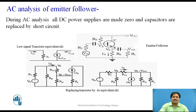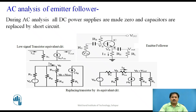We are more interested in the AC analysis of the emitter-follower circuit. In this case, we are replacing all the DC supplies by zero and all the capacitors by short circuits. Moreover, we are going to replace the transistor by a small-signal transistor circuit, which consists of an impedance called HI and a current source that depends upon the input current flowing in the base. In the circuit, the input current is IN, HI is the input resistance, and the current source is given as HFE into IN, and the current flowing into the output terminal is taken to be I_OUT.